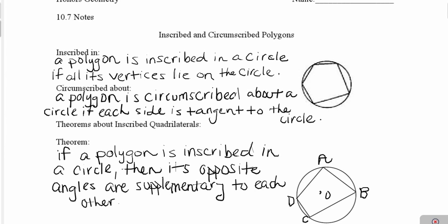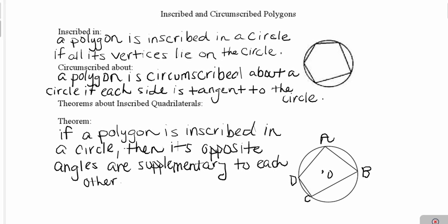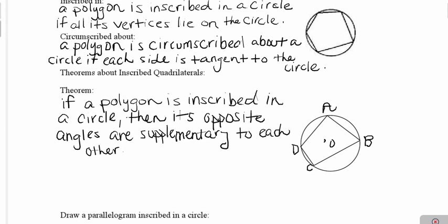is that angle A is supplementary to angle C since those are a pair of opposite angles, and angle B is supplementary to angle D since those are also a pair of opposite angles.